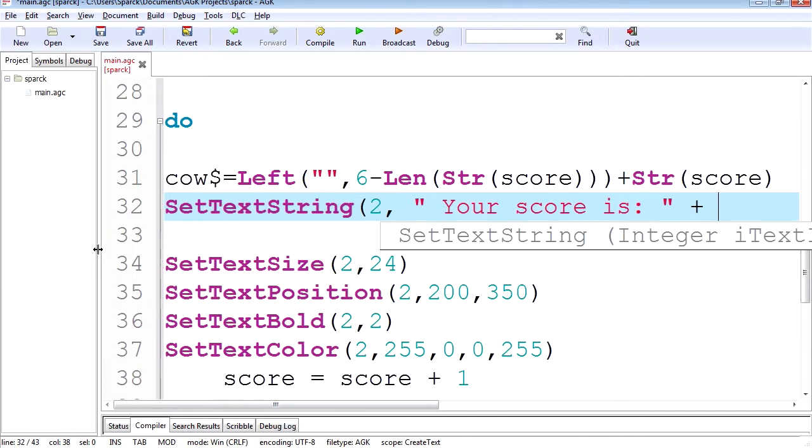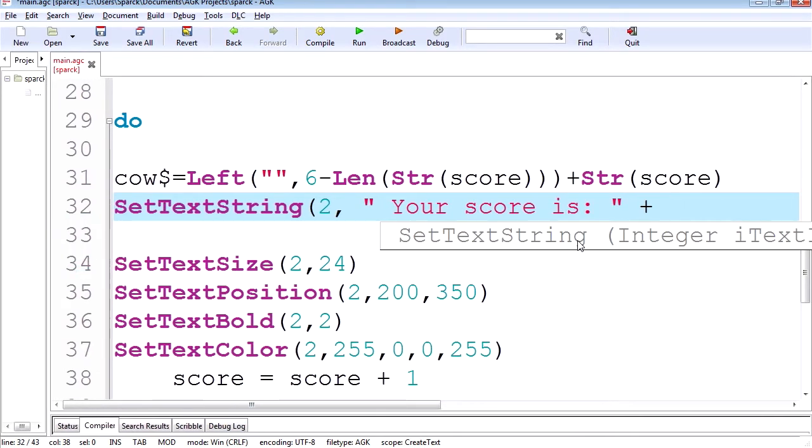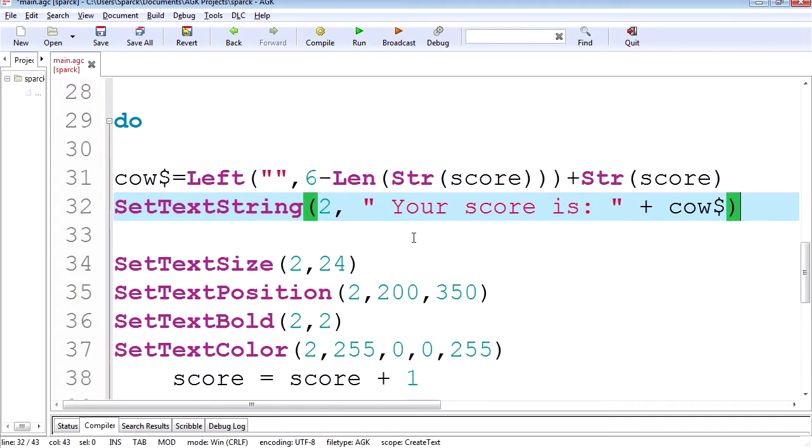We can put something here like your score is plus our cow variable. Okay. I don't know if you can see that. Let me see. Just move this back here. It's going to be cow. Dollar sign. And close it. Okay. All right. So that should work now. Let's run this.